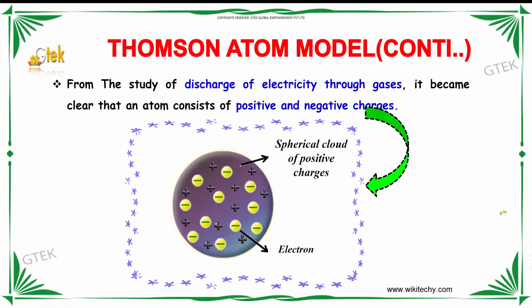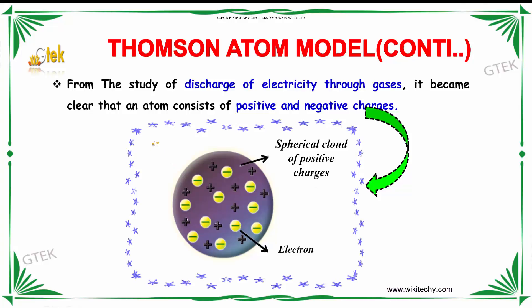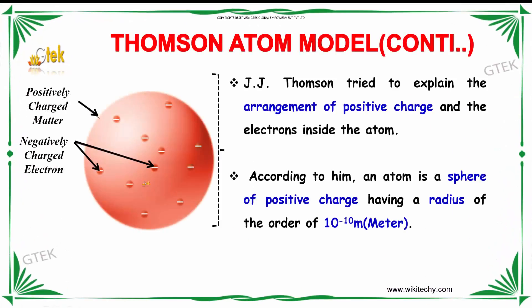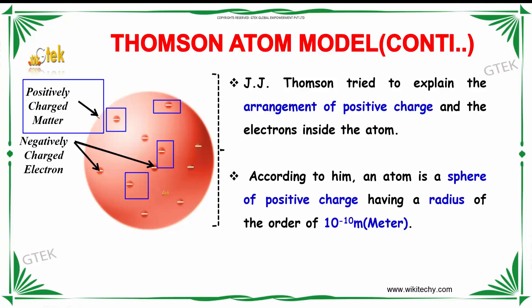Let's move to the Thomson atom model. From the discharge of electricity through gases, it became clear that an atom consists of positive and negative charges. It is a spherical cloud of positive and negative charges with electrons in it. J.J. Thomson tried to explain the arrangement of positive charge and the electrons inside the atom.